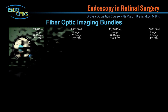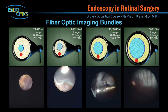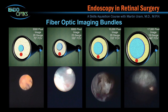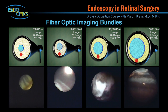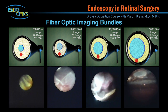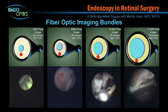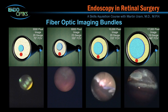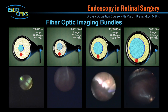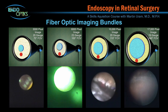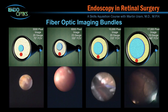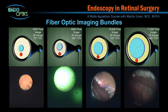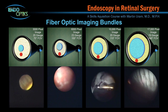Fiber optic image resolution is defined by the number of picture elements or pixels. Simplistically put, the higher the number, the better the resolution. Just know that there are other variables that determine image quality besides this feature. The price for more pixels is a larger diameter of the image guide. In the world of micro endoscopy, every 50 microns is significant, and so the surgeon must sometimes trade off better resolution for a smaller size.